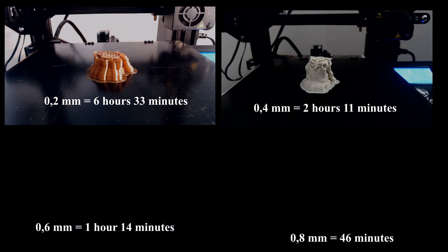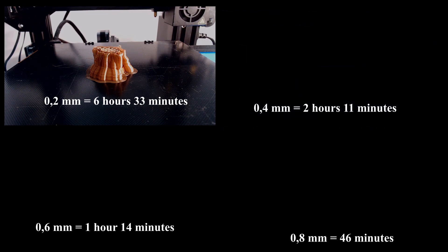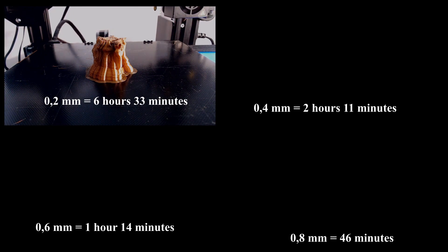As you can see, the 0.8mm nozzle is the quickest at 46 minutes, followed by the smaller nozzles accordingly. You have the data on the screen, but 0.2 was roughly 8.5 times slower than 0.8.